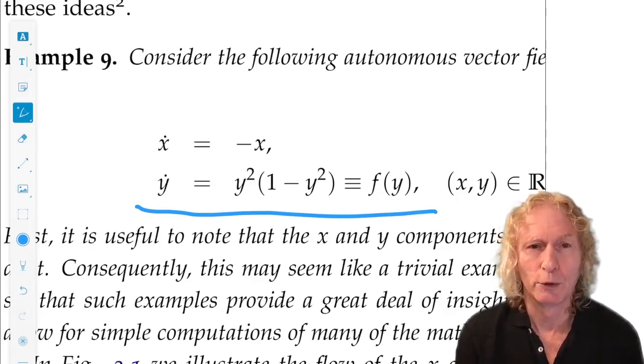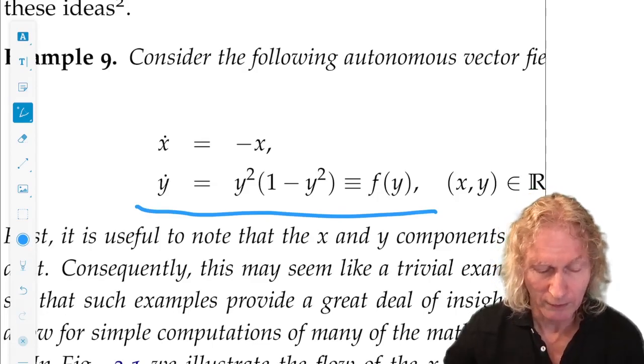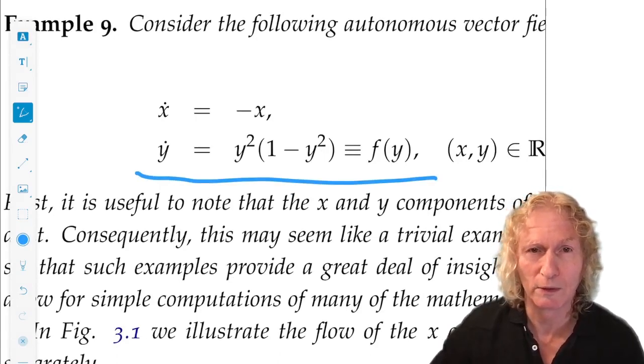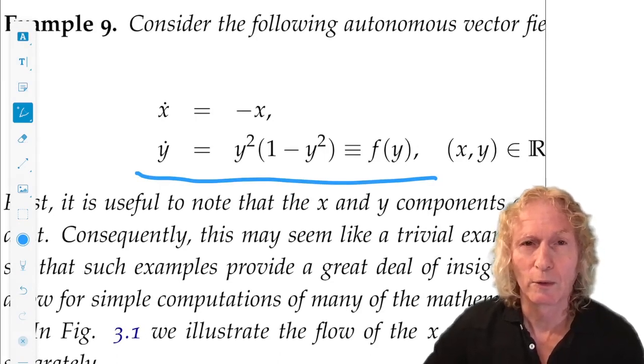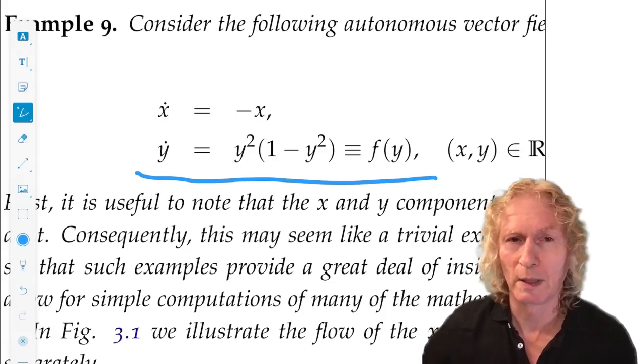So the first thing you do, my advice, is the simplest thing possible: find the equilibrium points. Those are the points in phase space, x comma y, where x dot and y dot vanish simultaneously.